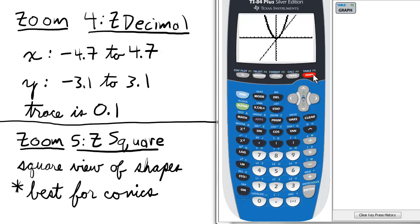Now let's say we want to see another zoom screen. So we select zoom and option 4 for Z Decimal.